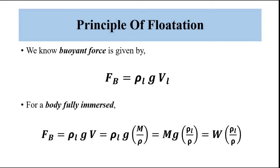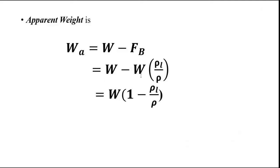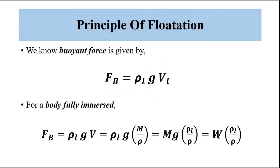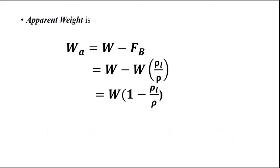So apparent weight can be expressed as W minus F_B, where F_B equals W × (ρ_L/ρ). Therefore, apparent weight equals W × (1 − ρ_L/ρ). This is another important expression for apparent weight, given in terms of the actual weight of the object and the ratio of the density of the liquid to the density of the object.